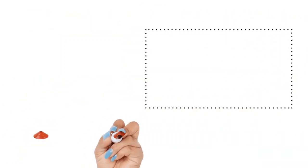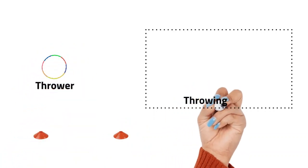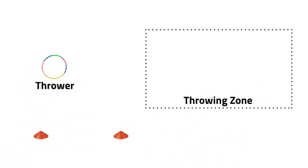Set up the game as seen here in the picture with a throwing hoop for the thrower and a throwing zone for the fielders to stand in.